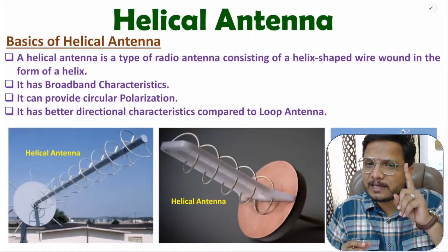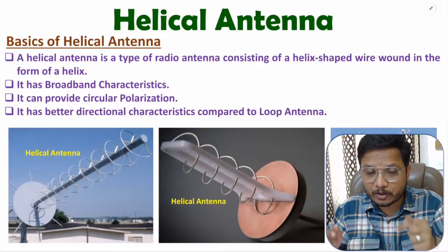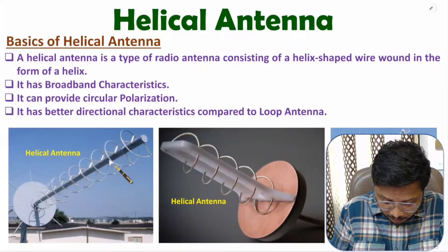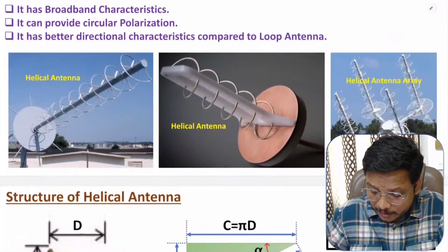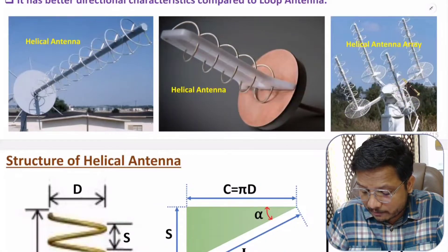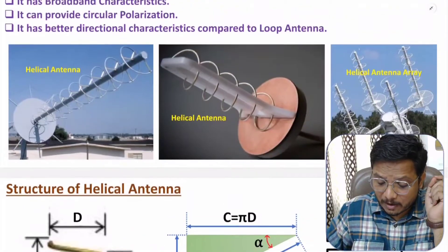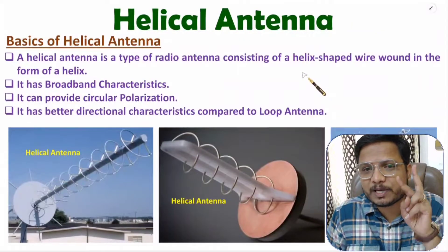Helical antenna can be structured using a single wire where the shape of the wire is wound in the form of a helix. Here we have a single wire wound in a form of helix — that is the helical antenna. We also have a helical antenna array in which four helical antennas are arranged, each with a single wire wound in the form of a helix.